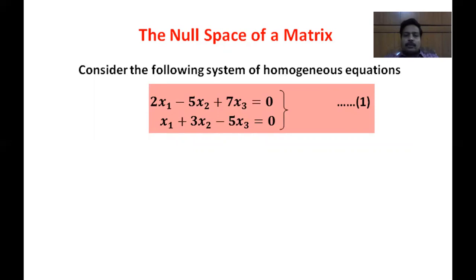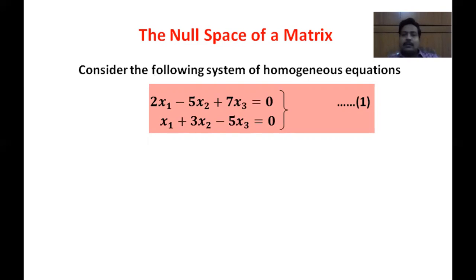If we substitute x1, x2, x3 all as zeros, those zeros will satisfy both equations — that is the trivial solution. For any system of equations there are three possibilities: no solution, unique solution, or infinitely many solutions. In the case of a homogeneous equation, the no-solution case will not arise since the zero solution always exists. So we will find two types: the zero solution and a set of other solutions.